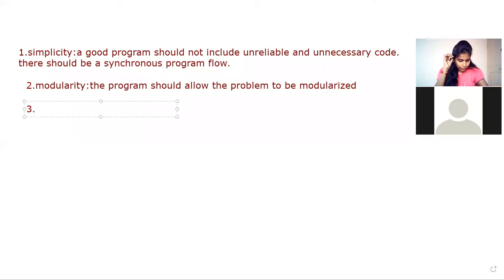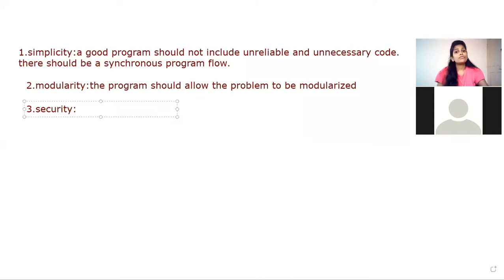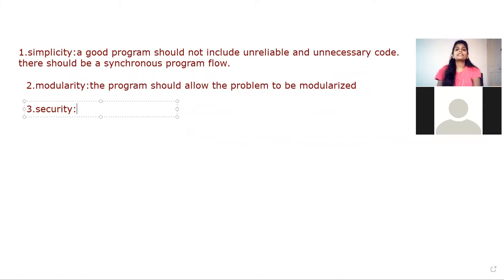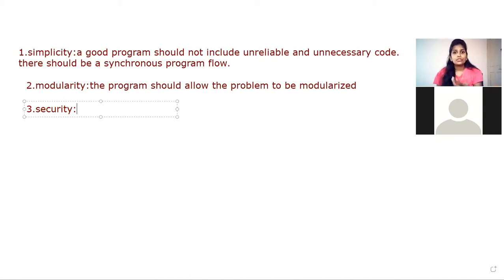The third characteristic is security. A program should provide security for each and every important piece of code. For example, take an application like Google Pay or PhonePe — these applications are developed with programming languages. The admin or programmers have permitted users to see only a certain amount of information. The important data is hidden from end users.